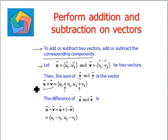This will give us the sum of the two vectors. The difference of the two vectors u and v is given by vector u minus vector v, which is the same as u plus negative v. This equals u1 minus v1 and u2 minus v2.